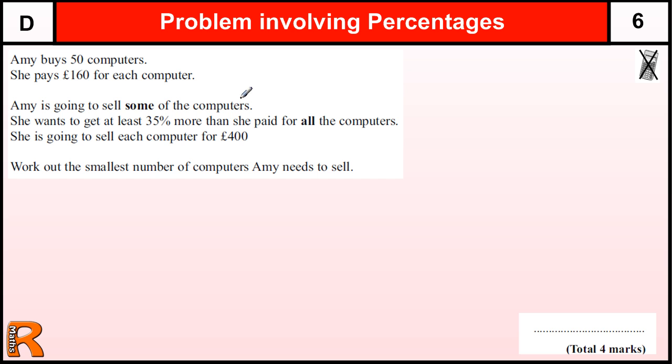She's going to sell some of the computers, she wants to get at least 35% more than she paid for all the computers. So how much she paid is this amount, and she wants to get 35% more than that. She's going to sell each computer for £400. Work out the smallest number of computers Amy needs to sell.